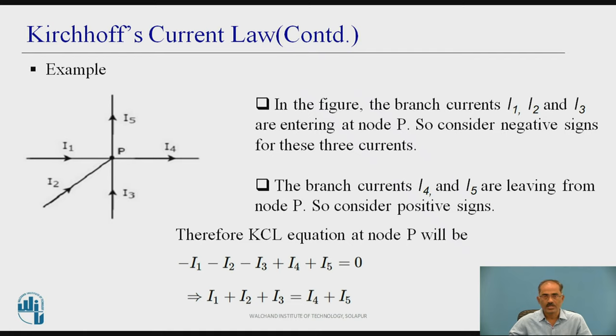Similarly, the branch currents I4 and I5 are leaving from the node P. So, these are considered as positive signs. Therefore, when you apply the Kirchhoff's current law equation at node P which will be I1, I2, I3 are entering to the node. Those are considered negative signs. Therefore, minus I1, minus I2 and minus I3.